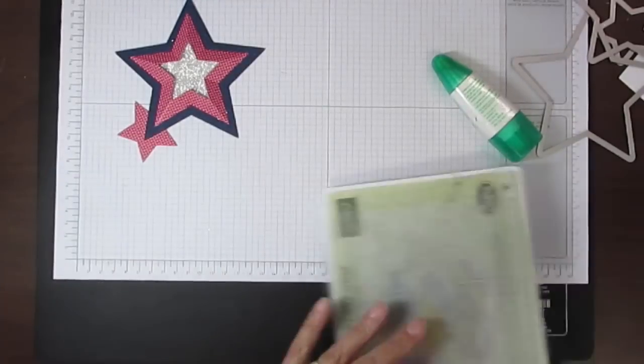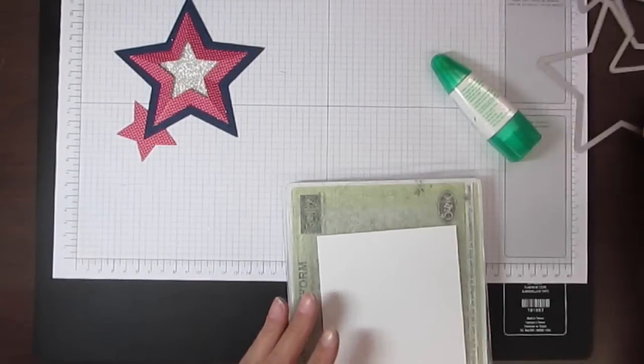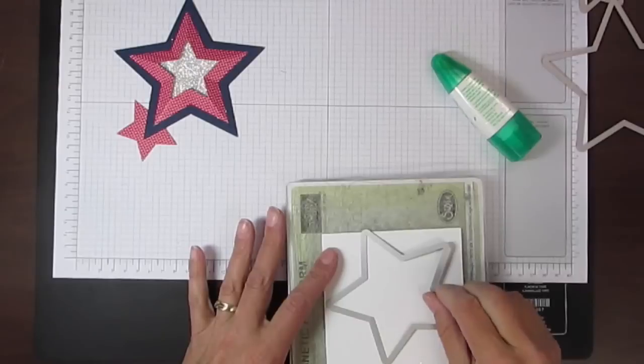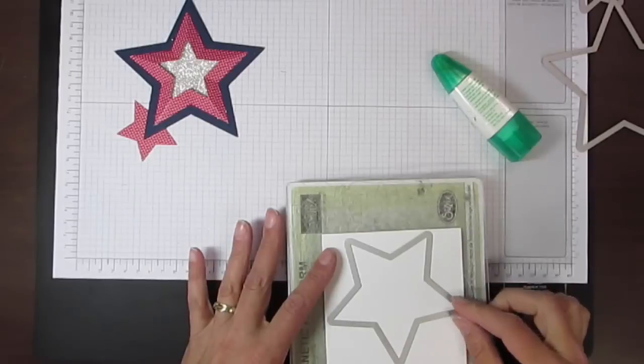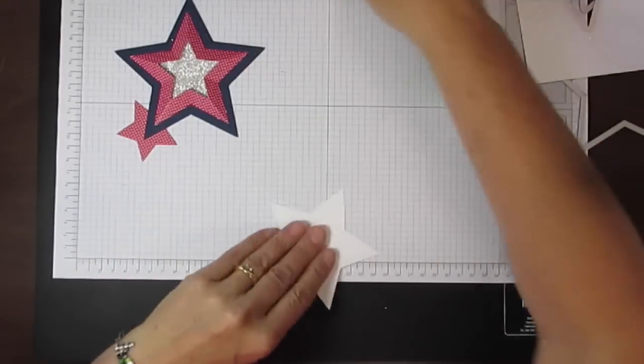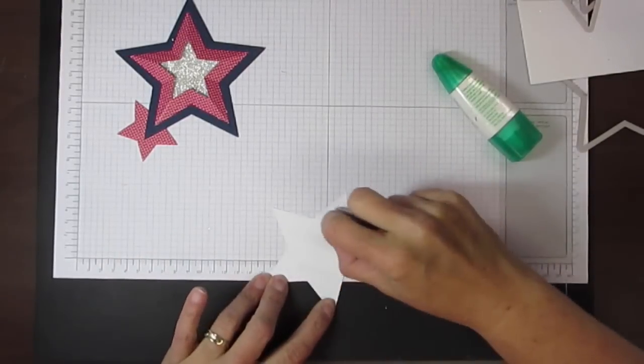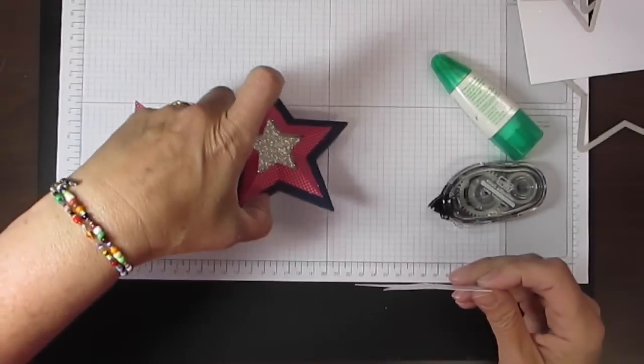That's the second to the largest star. Run that through the big shot, and that gets adhesive right to the inside of my card.